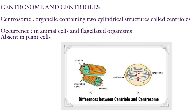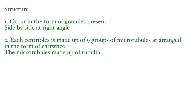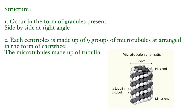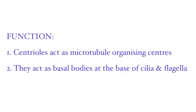Centrosomes are absent in plant cells, though some lower plant cells like motile algae do have them. Structurally, the centrioles are made up of nine groups of microtubules arranged in a circle — a cartwheel organization — tilted at an angle of 40 degrees. These microtubules are made of a protein known as tubulin. The function of centrioles is to act as microtubule organizing centers during the formation of spindle fibers, and they also act as basal bodies at the base of cilia and flagella.